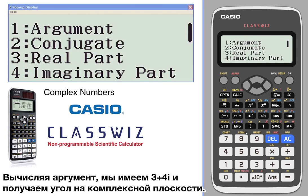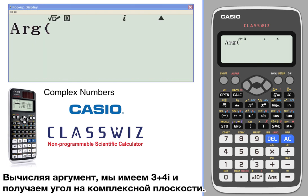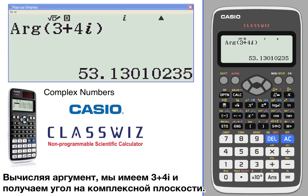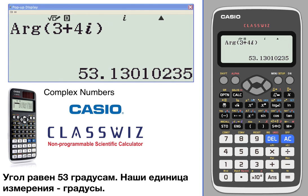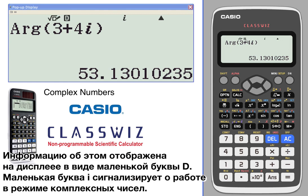For an argument calculation, if we go with three plus four i, it will give us the angle on the complex plane, which is 53 degrees. We're currently in degree mode, which is why you see the little 'd'. The 'i' indicator tells you that you're in imaginary mode.